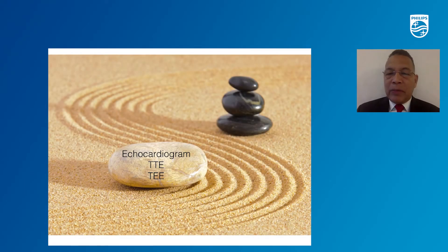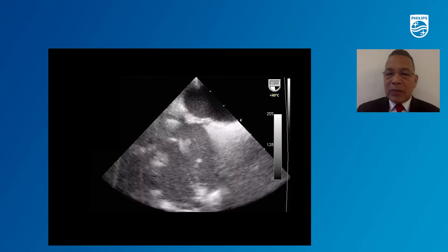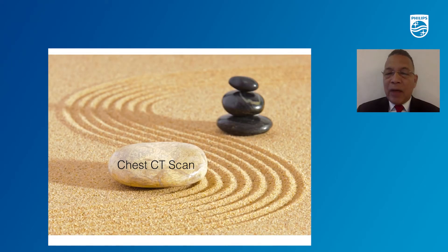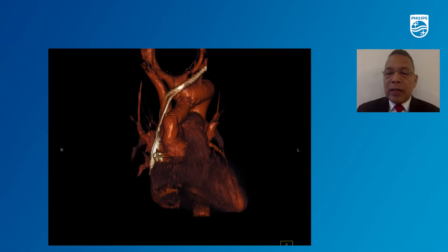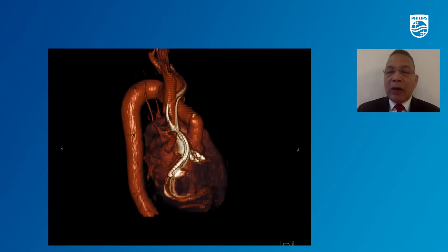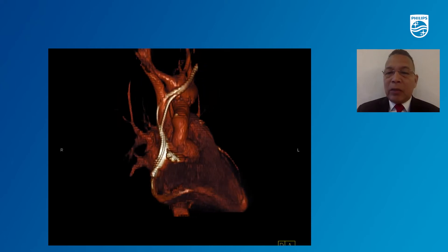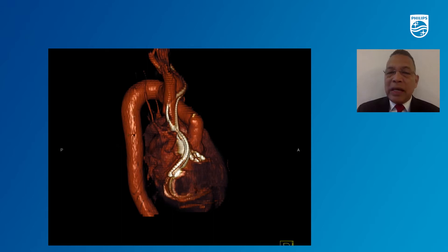We use right anterior oblique and left anterior oblique projections during extraction to make sure we stay coaxial. On patients with infections, we do echocardiograms — especially transesophageal echocardiograms — to look for the size of vegetation. On every patient, we do a gated CT scan of the chest with contrast, and we do 3D reconstructions to make sure the leads are not extracardiac, and to see how the leads are positioned in the anterior or posterior part of the superior vena cava.